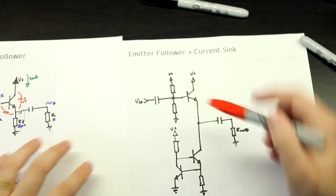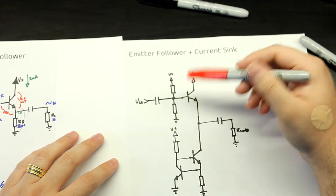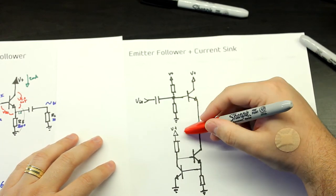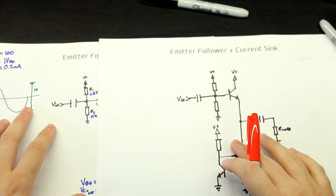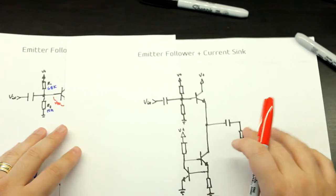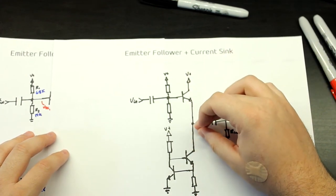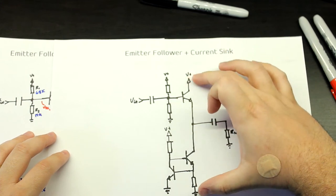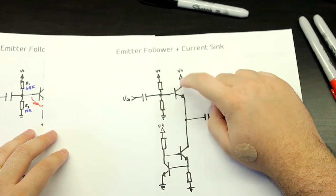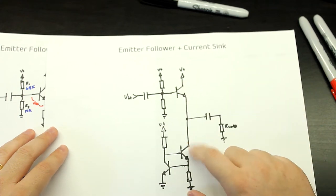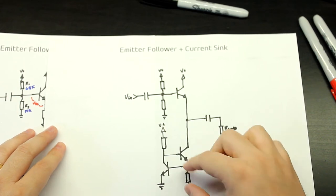Now we can just set this point to, say, half the supply rail, so that we've maximized the capability of this buffer. To get the most voltage swing, we shouldn't just bias this point to half of the supply rail because we have VCE sat here, and we also have VCE sat here, and we also have this point right here which also has a voltage across it. The optimum voltage for this point can be calculated as VE.